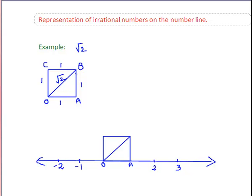Since OAB is a right-angled triangle, by applying the Pythagoras theorem to this right-angled triangle, we get OB, which is equal to root 2.